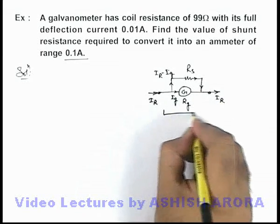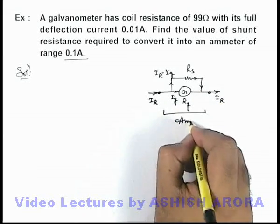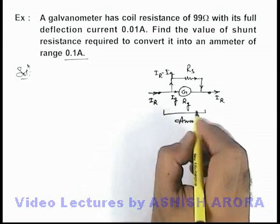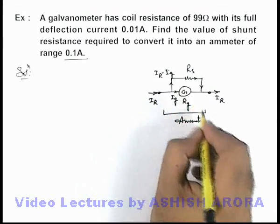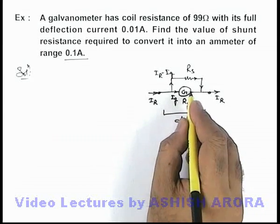So this system can be treated as an ammeter in which we can see when a current Ir is passed it will give deflection in the deflection meter.